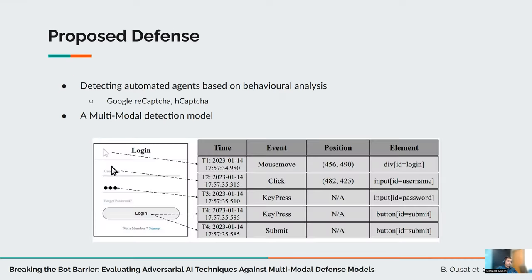We know that there has been a trend to use the behavior of visitors or clients to detect whether or not they are a bot or human. Such solutions include Google ReCAPTCHA and H-CAPTCHA, where the behavior of the visitor is used to determine their identity.